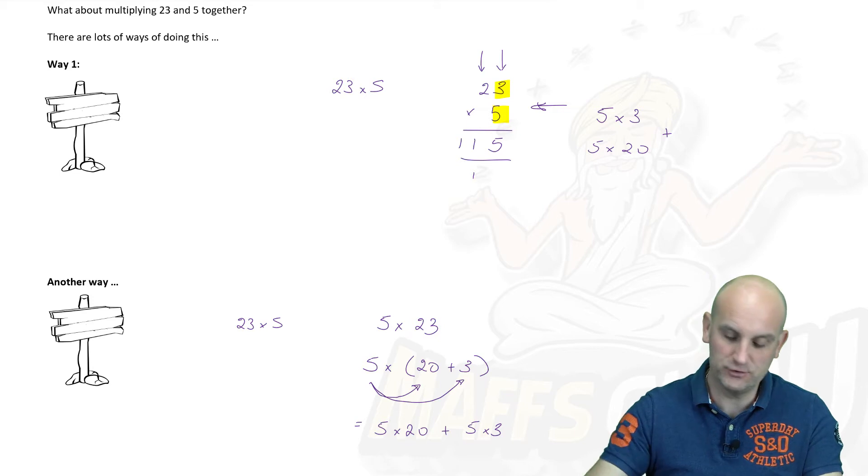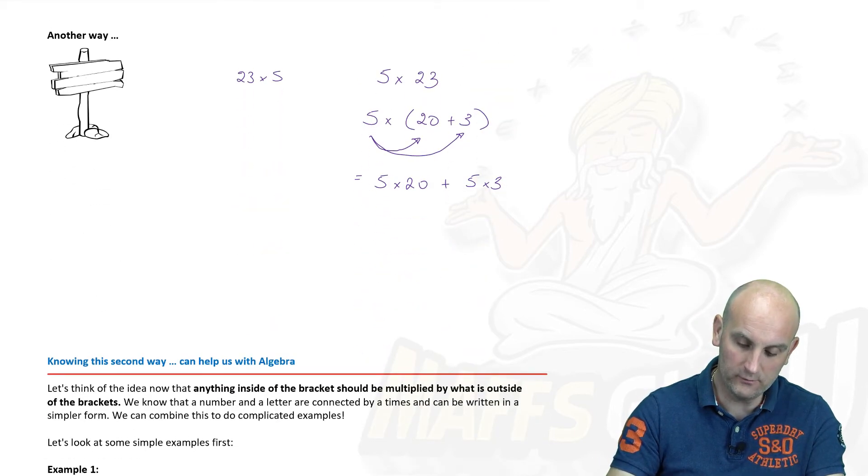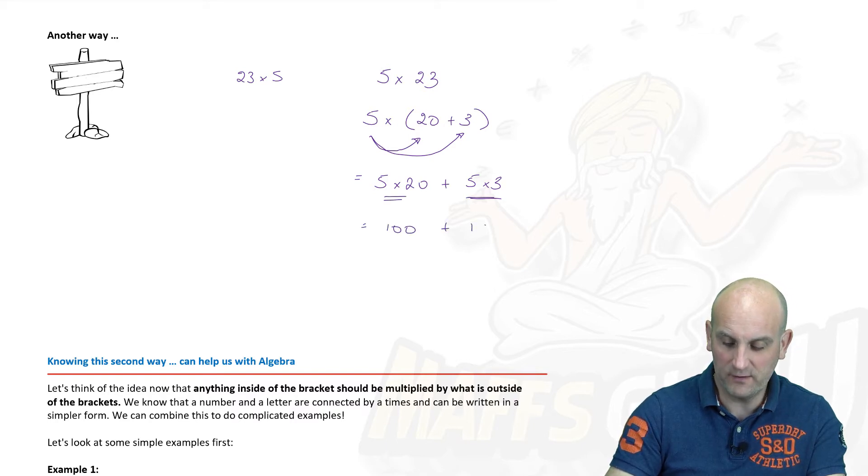So 5 times 3, oh hold on a moment, 5 times 3 and 5 times 20. Well 5 times 20 we know is 100. 5 times 3 is 15. And so when we add them together we get the same value as 115.